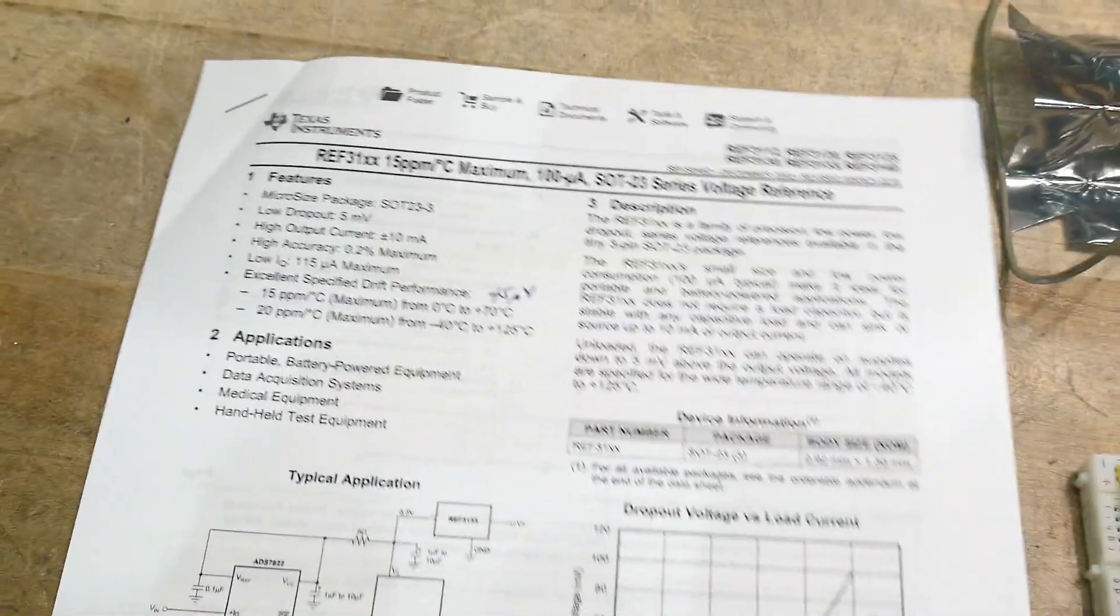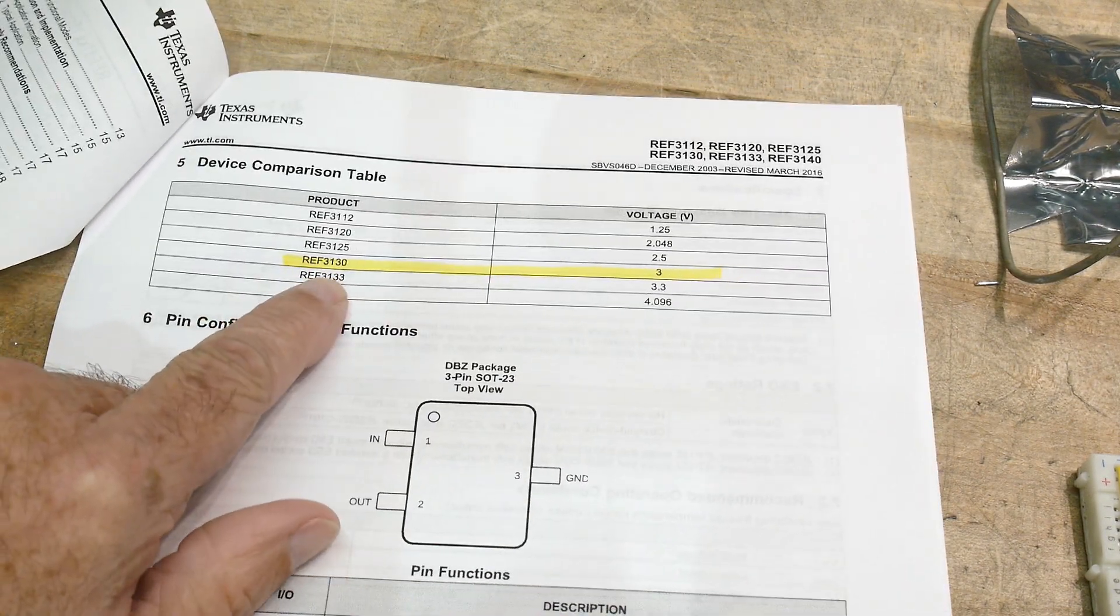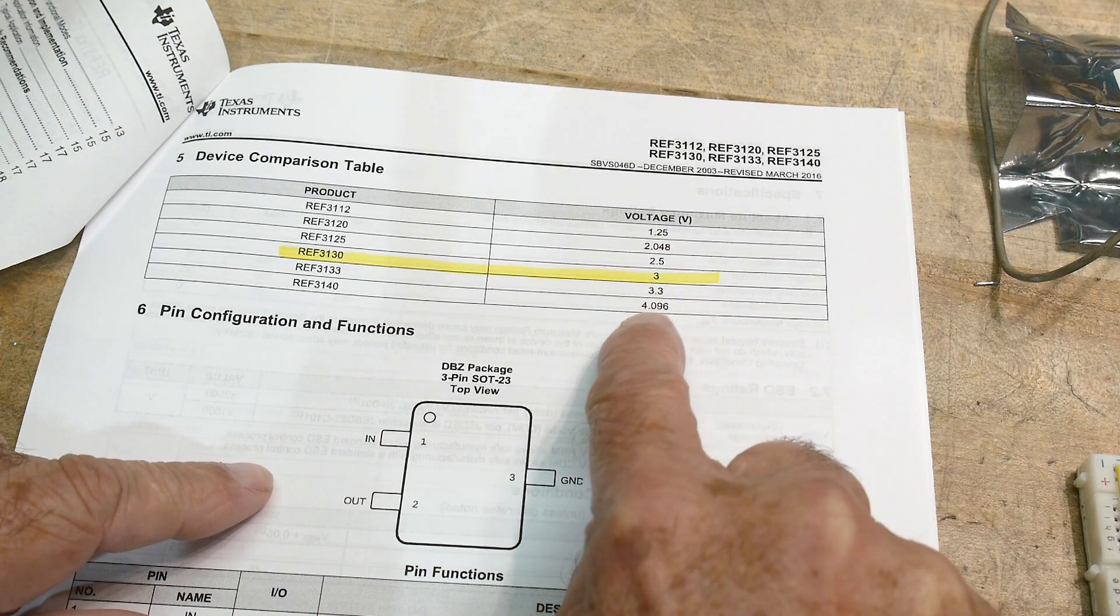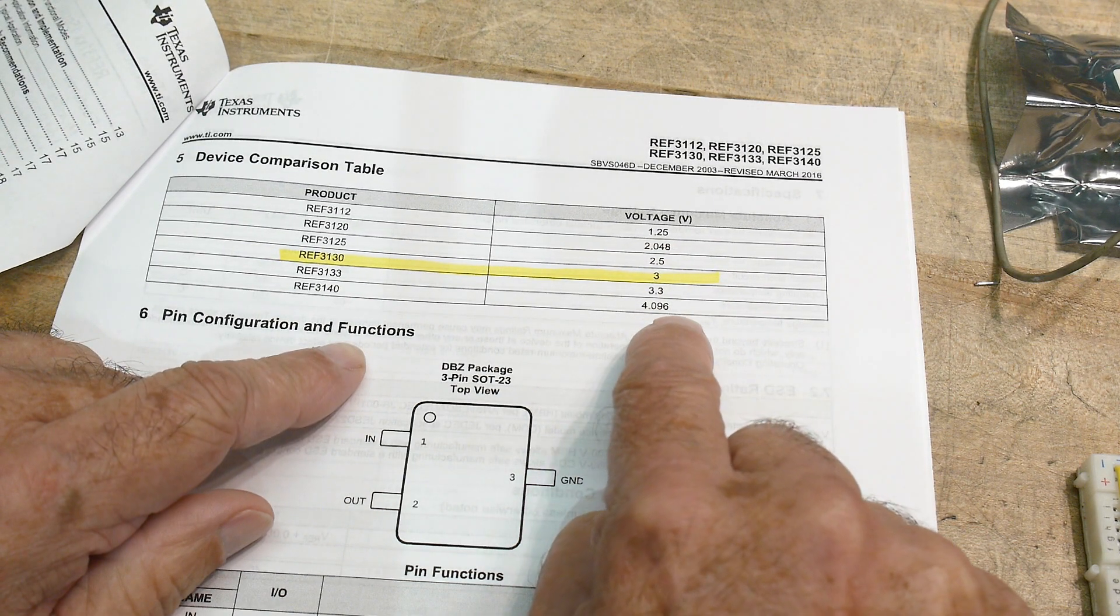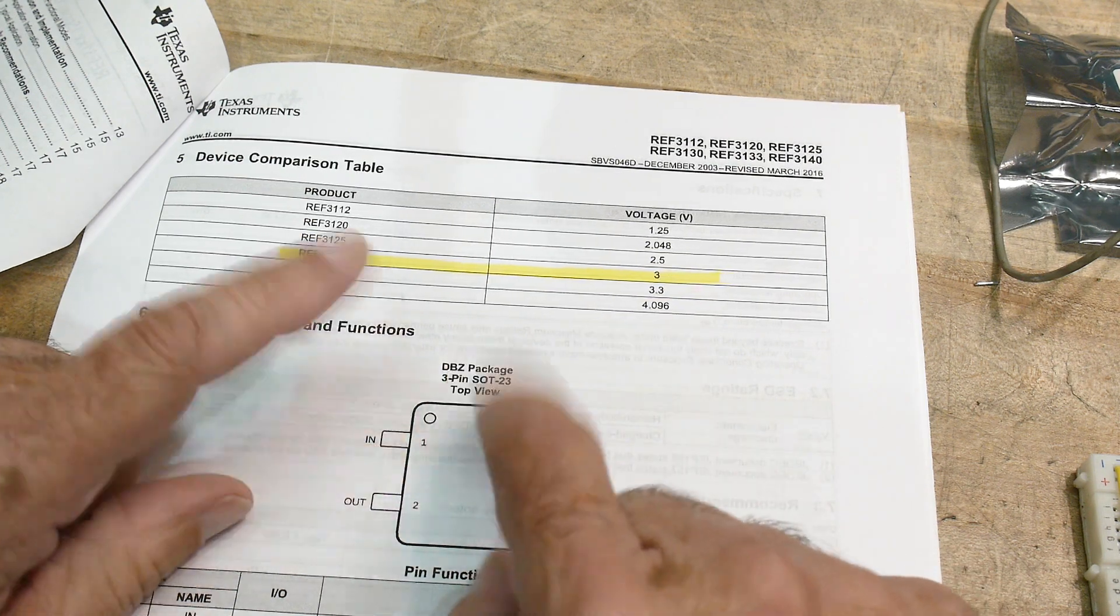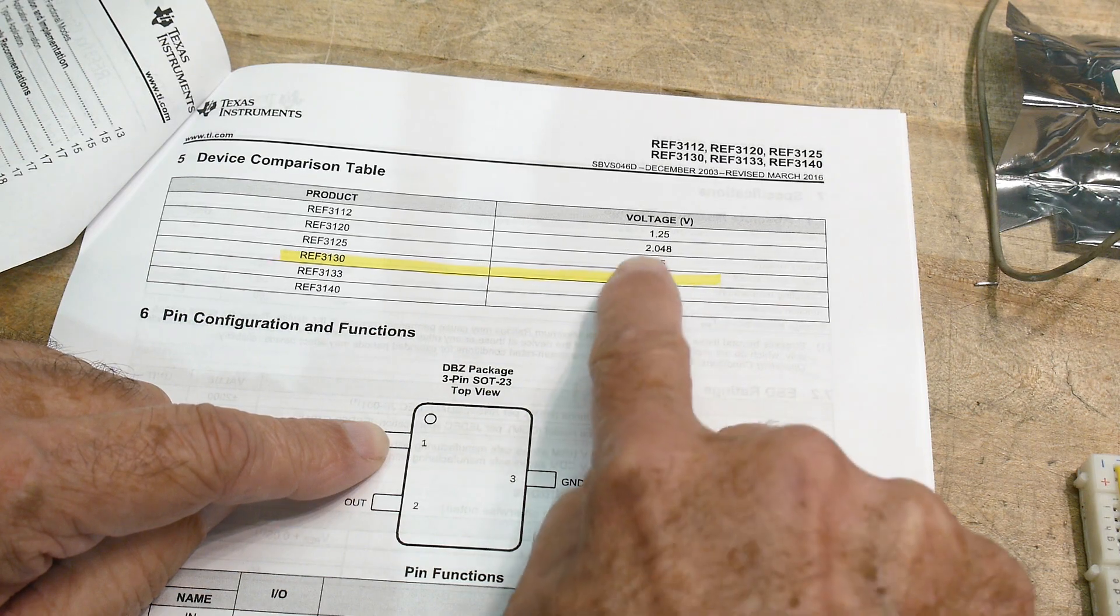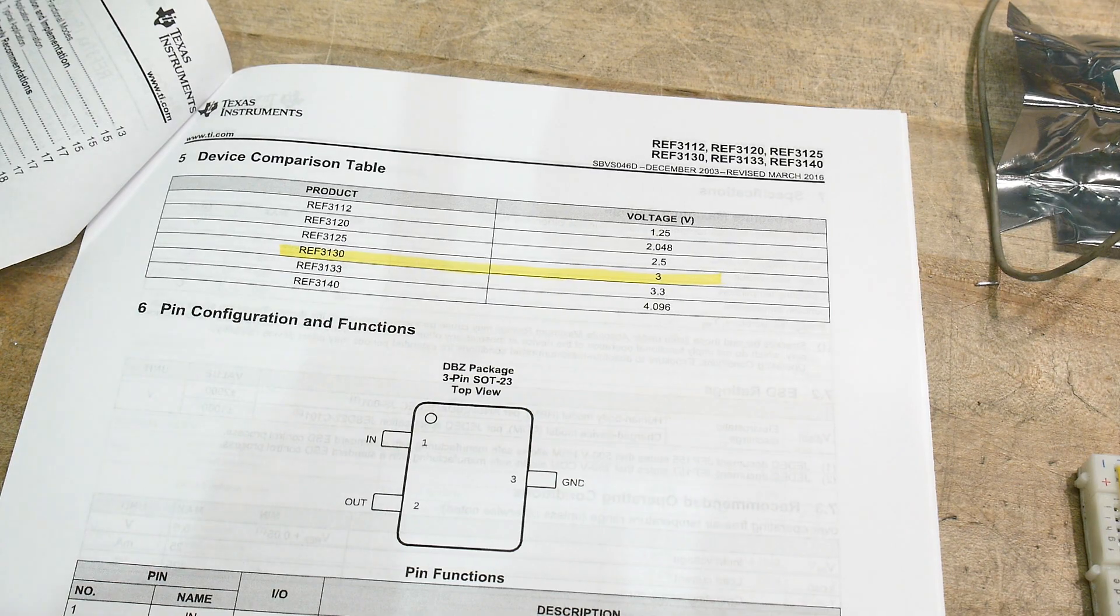Let's go to some other pages here. Like I said, I have the three volt version, but it comes in a 1.25 up to a, this is a really cool one, 4096. So if you run this as your reference for an ADC or DAC and stuff, you can get a 2048 and a 4096. So that's pretty nice.